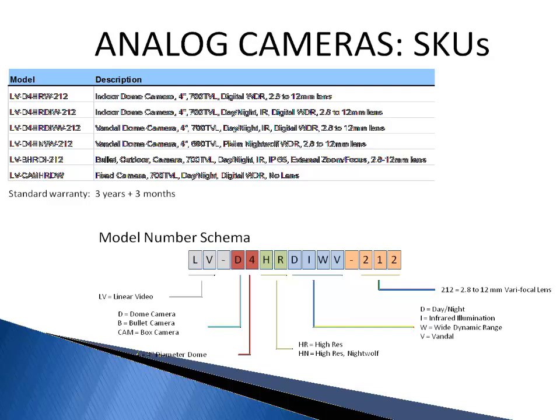In the blue boxes, you will notice the DIWV. The D stands for day-night, I for infrared illumination, W is for wide dynamic range, and V is for vandal. The 2.12 refers to the 2.8-12mm variofocal lens. This model number is thus designed so the core features are easily recognized.